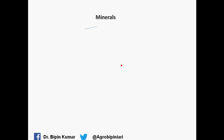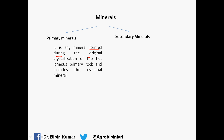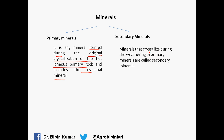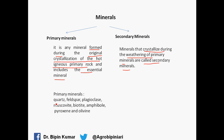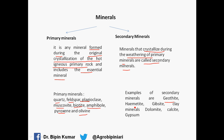Minerals are of two types: primary minerals and secondary minerals. Primary minerals are formed during the original crystallization of hot igneous primary rocks, and they include essential minerals. Secondary minerals form through crystallization during the weathering of primary minerals. Examples of primary minerals are quartz, feldspar, plagioclase, muscovite, biotite, amphiboles, pyroxenes, and olivine. Examples of secondary minerals include goethite, hematite, gibbsite, clay minerals, dolomite, calcite, and gypsum.